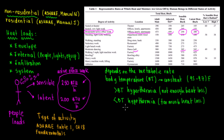There is also ASHRAE Table 4, which is based on metabolic heat generation — that also depends on the activity and goes deeper into detail. We won't cover that right now, but it's a heads-up for other videos.